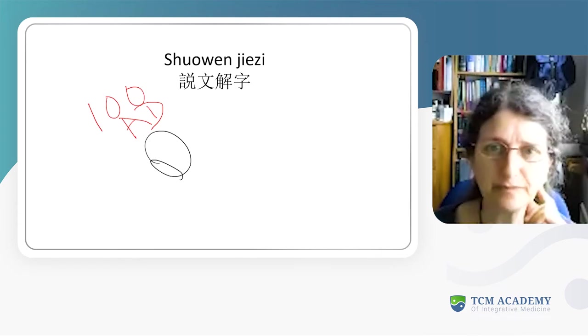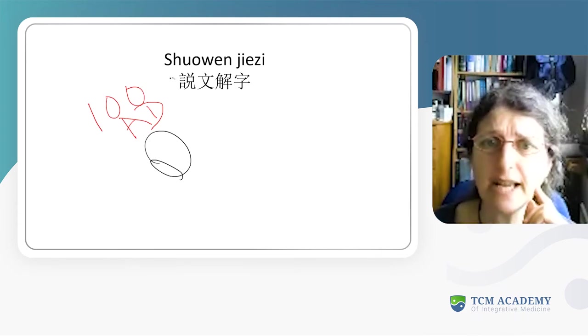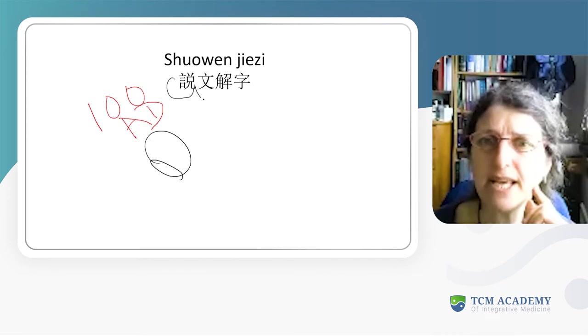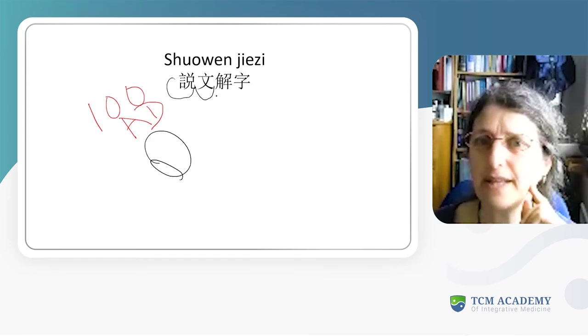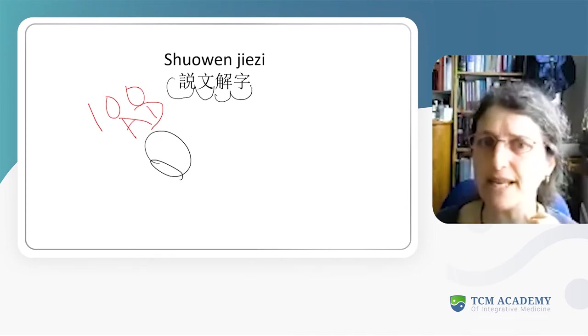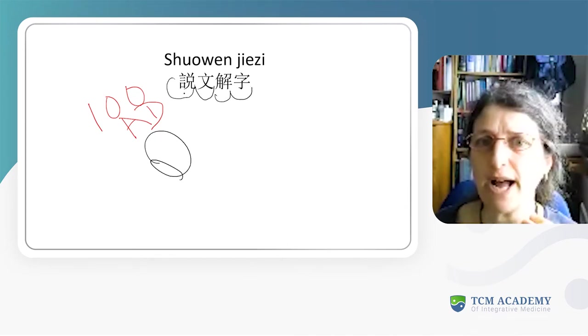But it's quite useful because it gives good ways of breaking down what's going on in a character. The Shuowen Jiezi is talking about speaking about words - that's this bit here - and then here it says explaining characters.